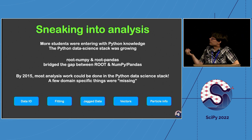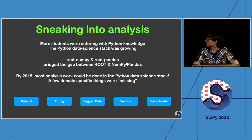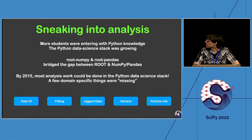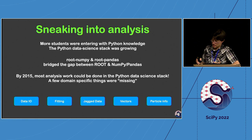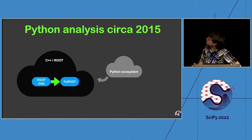Extra packages like root-numpy and root-pandas started showing up to provide nicer bridges into Python. By around 2015, you could do a lot of high energy physics analysis in the Python stack, but there were a few domain-specific things missing — like reading ROOT data files, fitting (which was very important in HEP), and jagged data. This idea of variable dimensions — a different number of tracks per event, hits per track — meant these were not rectangular datasets.